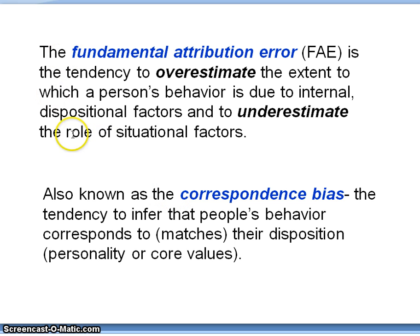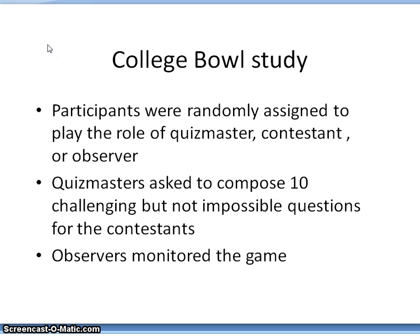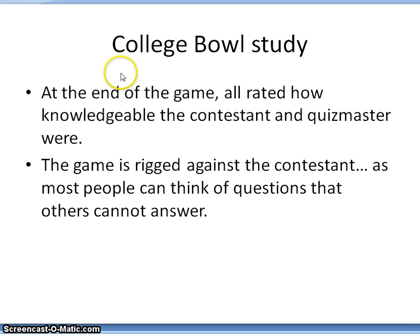Here's one of the classic studies done back in the 70s: the College Bowl study. Participants were randomly assigned to play the role of either quiz master, contestant, or observer — sort of like a trivia game. The quiz masters were asked to compose ten challenging but not impossible questions for the contestants. The observers monitored the game, and the contestants tried to answer the questions. At the end of the game, the quiz masters, contestants, and observers all rated how knowledgeable the contestant and the quiz master were.